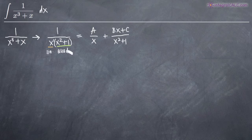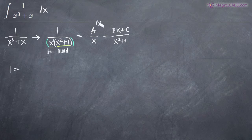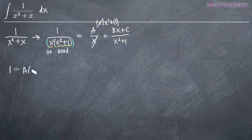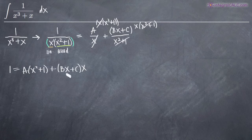Now we want to get rid of our denominators. We'll multiply both sides of the equation by the denominator from the left-hand side, which is x times the quantity x squared plus 1. On the left-hand side, the denominator cancels leaving just 1. On the right-hand side, the x's cancel the A term leaving A times x squared plus 1, and the x squared plus 1 cancels in the second term leaving Bx plus C times x.